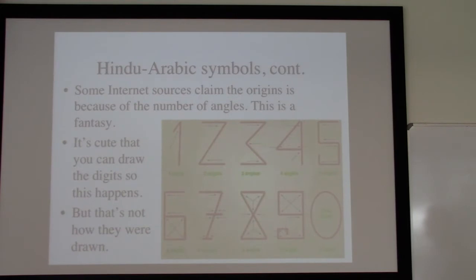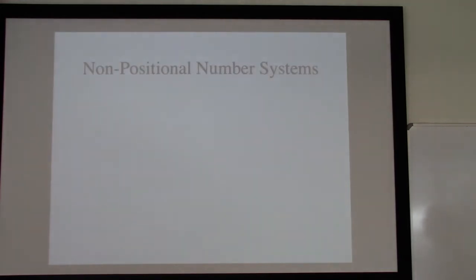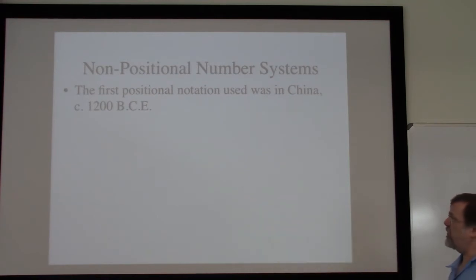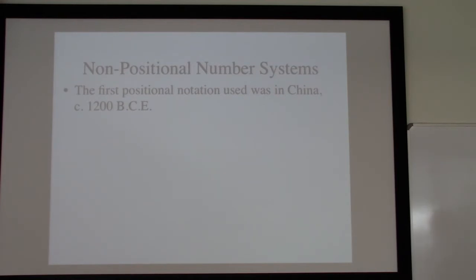My interest here really is not on the Hindu-Arabic number systems, but rather on some of the earlier systems and especially the non-positional number systems that were used at the beginning. The first positional notation system arises in China during the Qing Dynasty, probably about 1200 BCE. Before that, everything was non-positional.